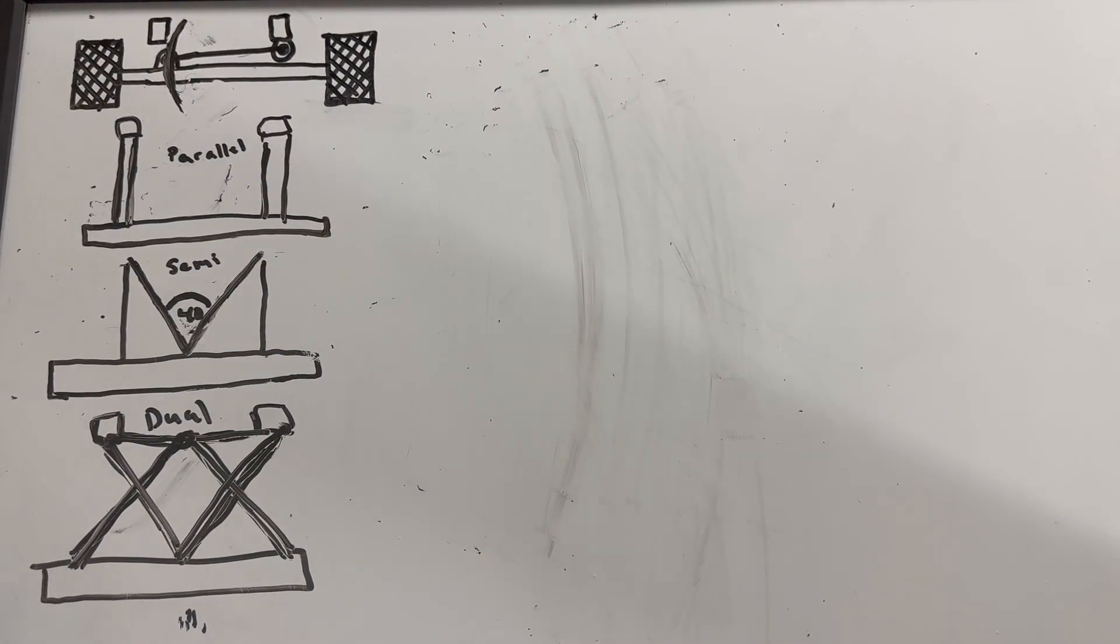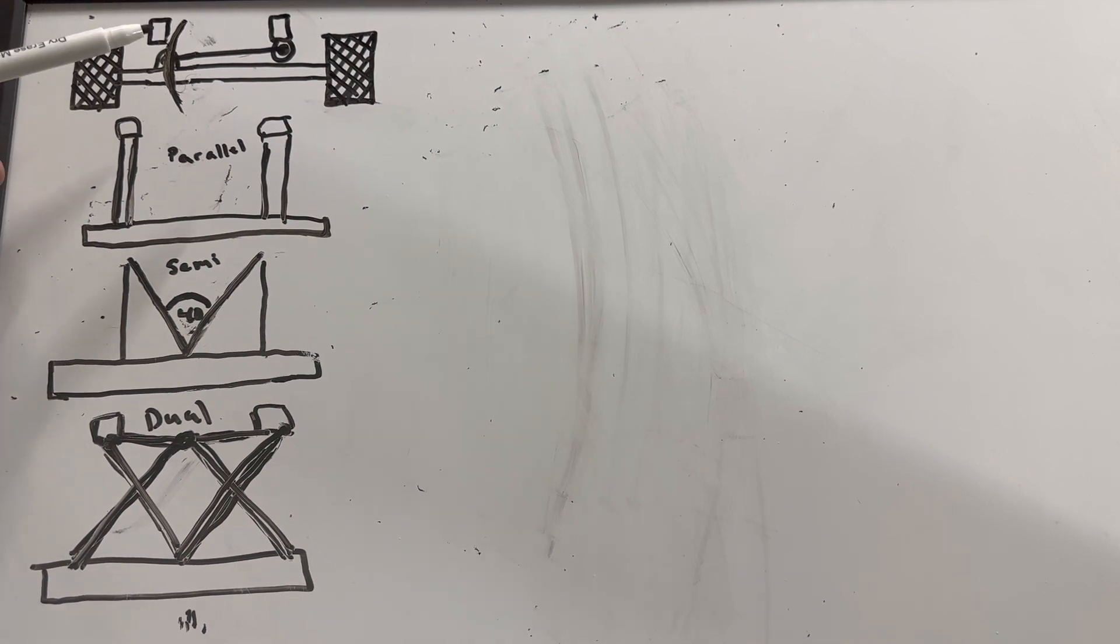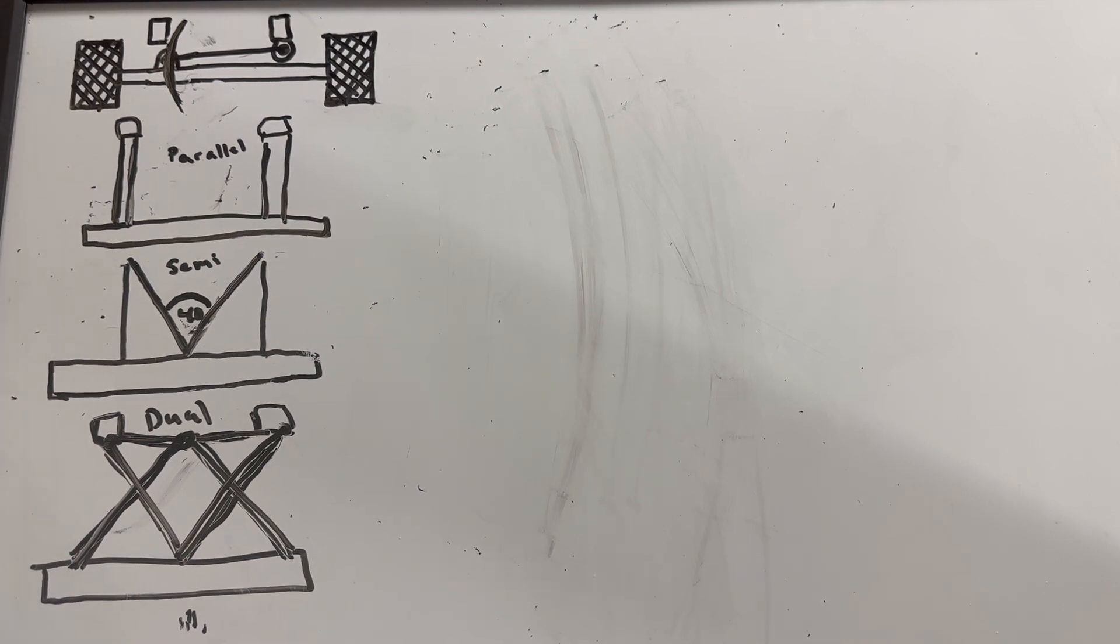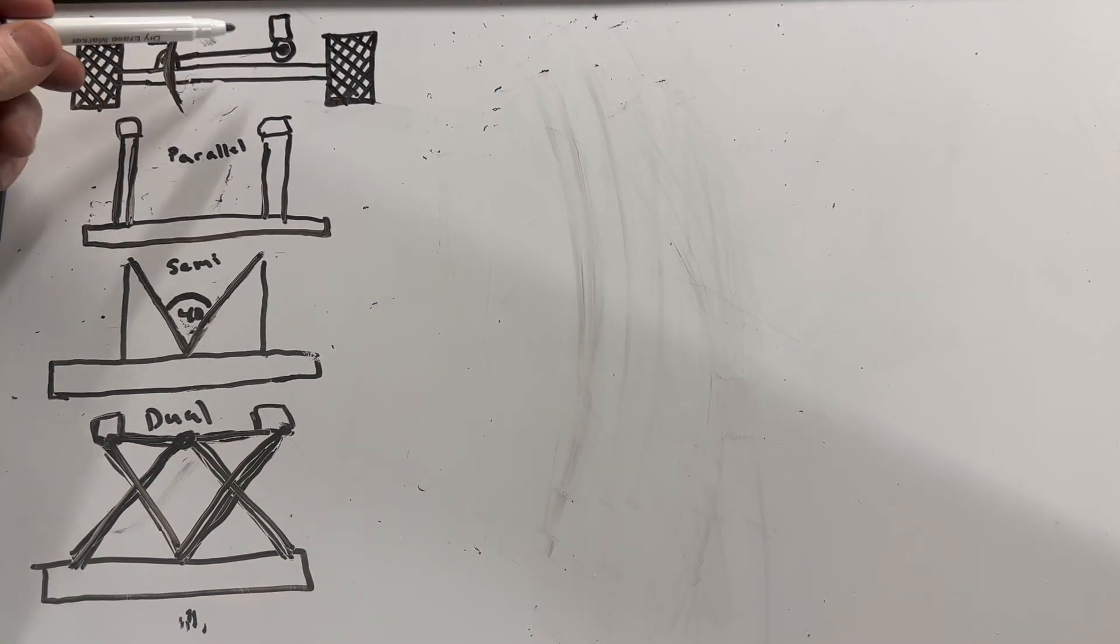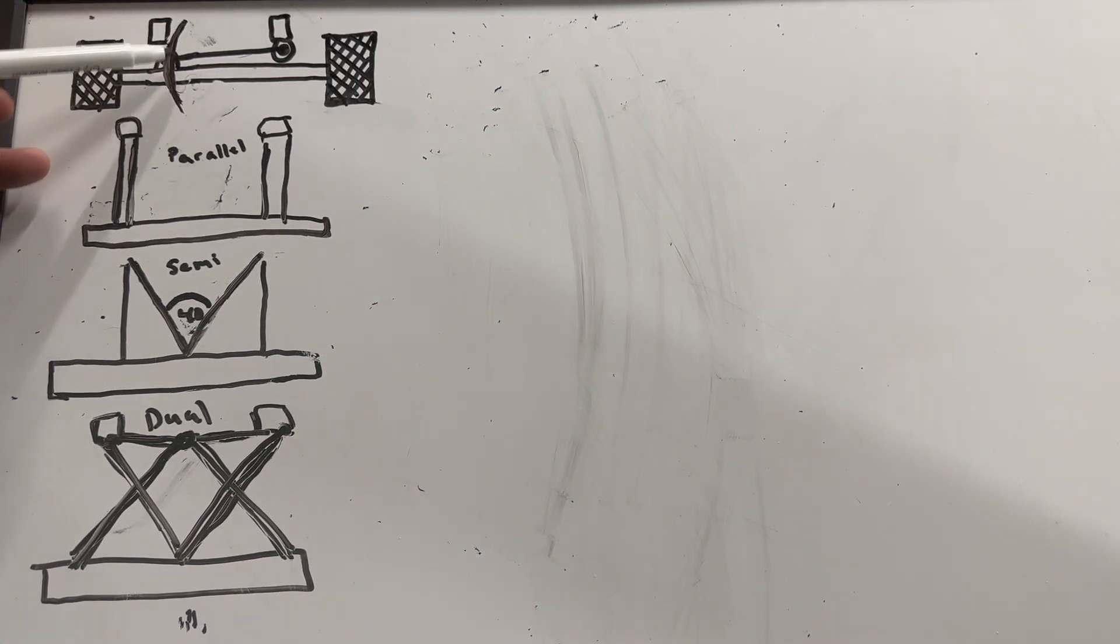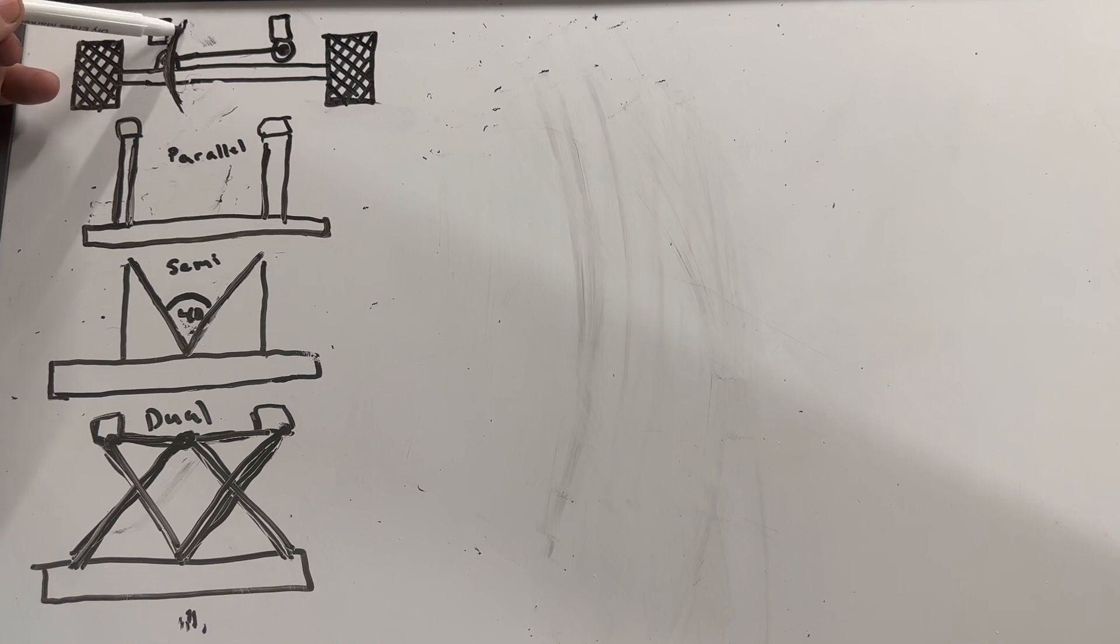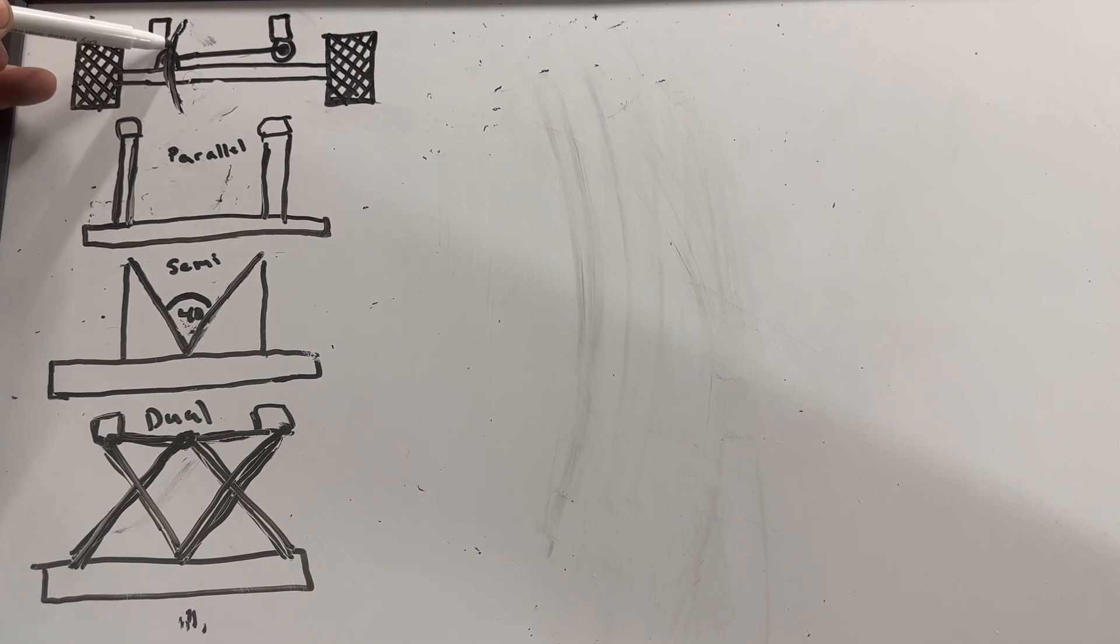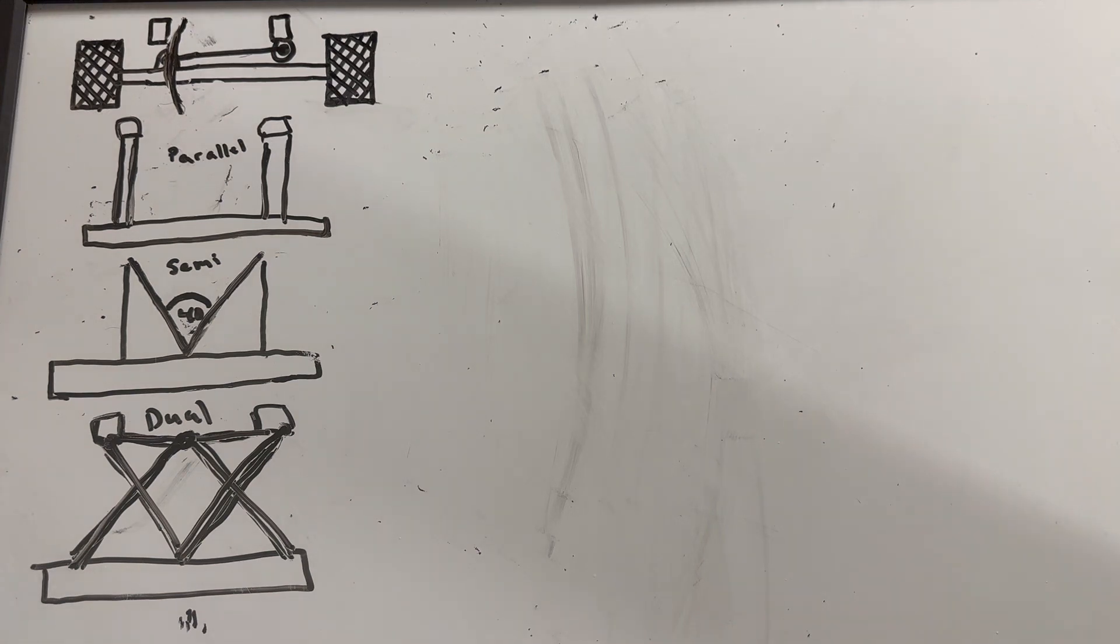I got a little illustration here. I just want to touch on what's a track bar or panhard bar. We got our tires, our axle, these are our frame rails, we got our frame mount, our track bar, and then we got our axle mount. This line represents the arc of our track bar.